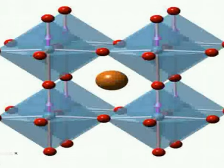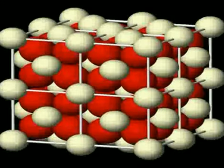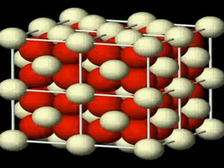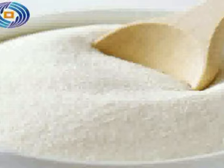For photorefractive applications, barium titanate can be doped by various other elements, for example iron. Thin films of barium titanate display electro-optic modulation to frequencies over 40 GHz. The pyroelectric and ferroelectric properties of barium titanate are used in some types of uncooled sensors for thermal cameras.